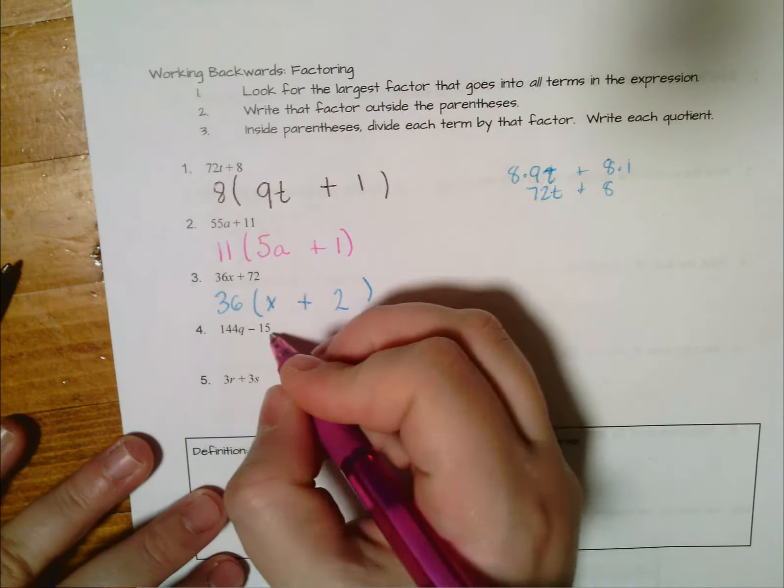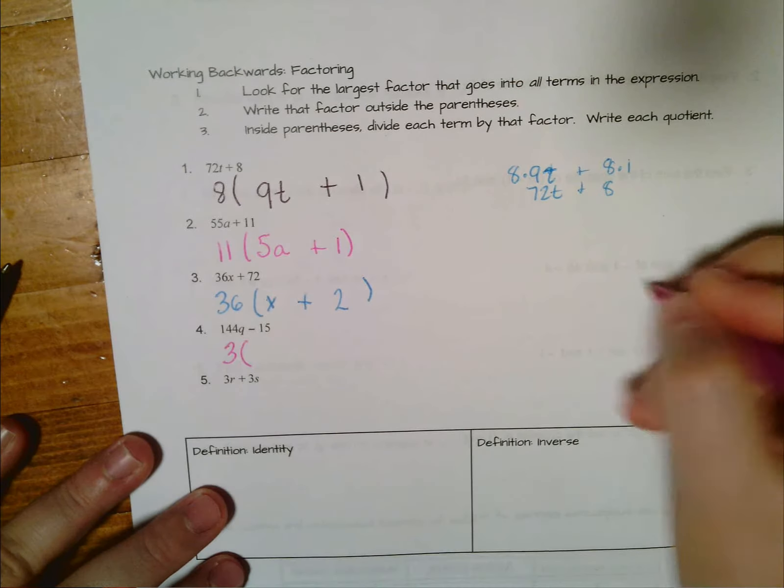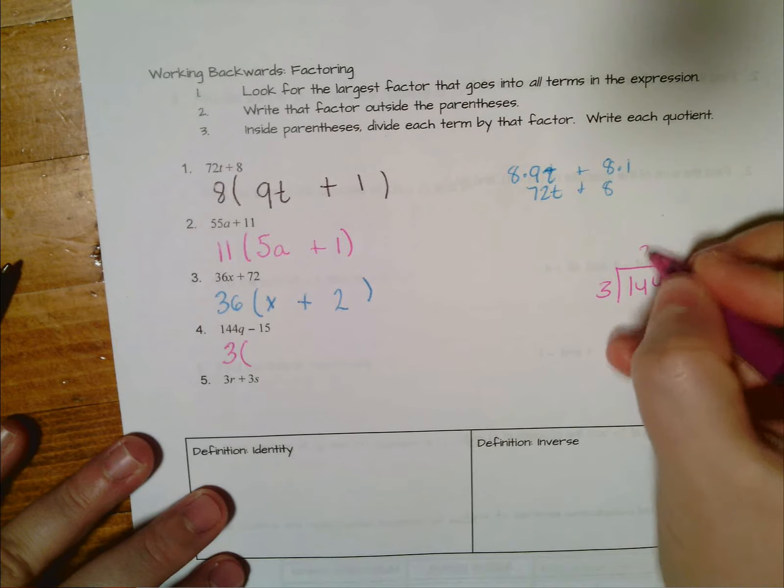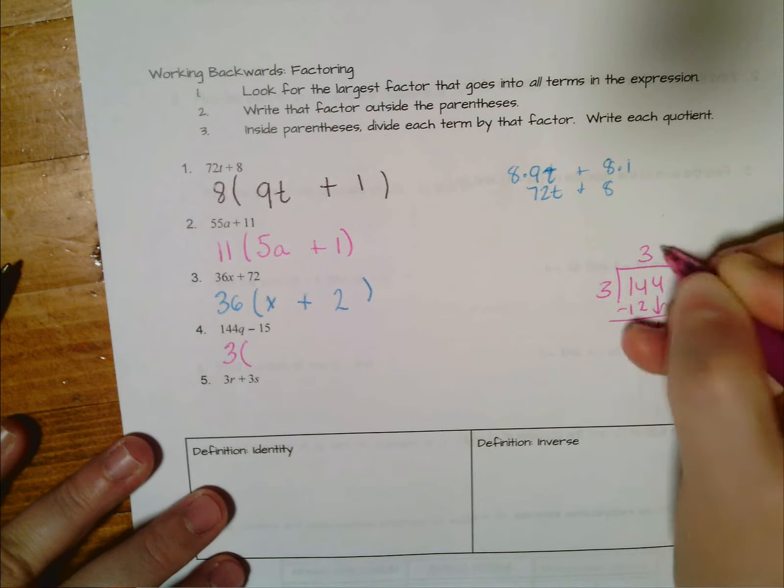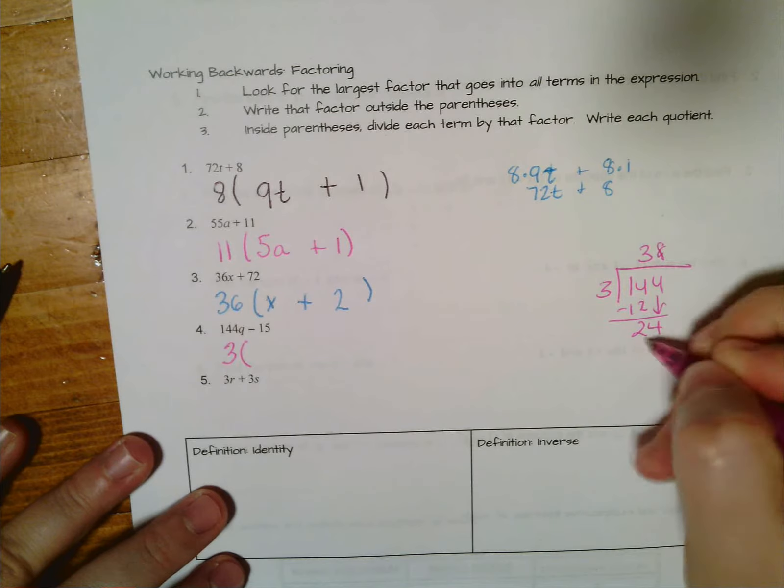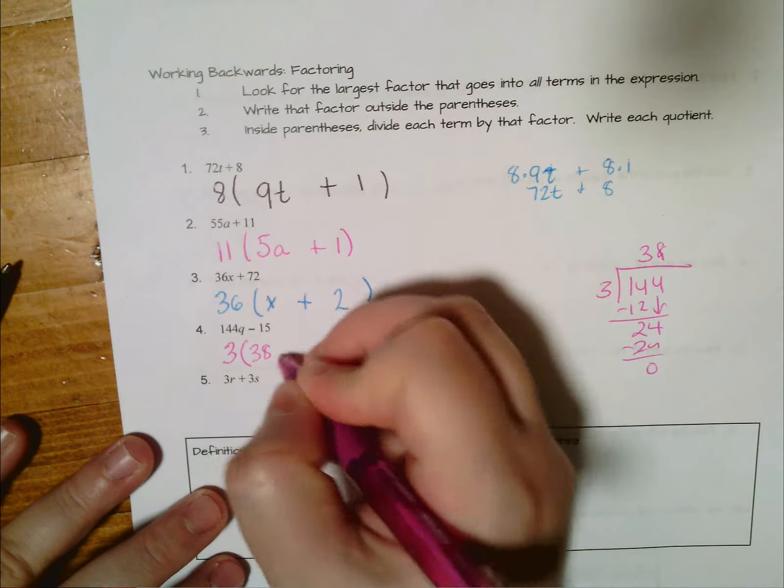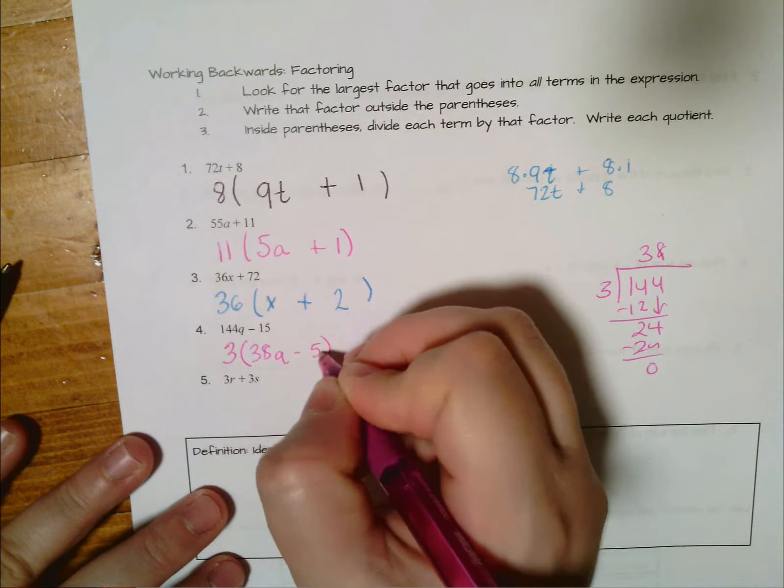Next one: 144q minus 15. The biggest number that goes into both of those is 3. 144 divided by 3, if you don't know offhand you don't need a calculator for that, you can figure out pretty quickly that it's 48. So 3 times 48q minus 5, because 3 times 5 is 15.